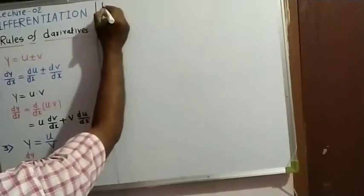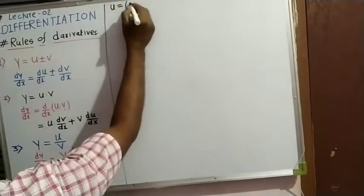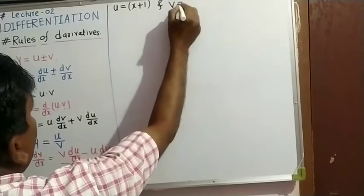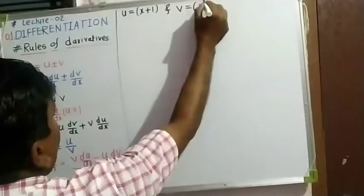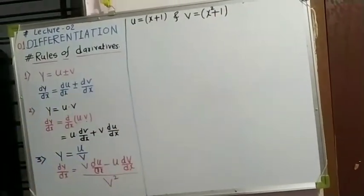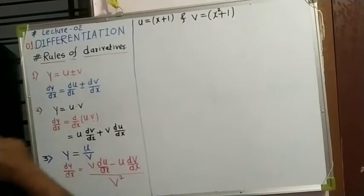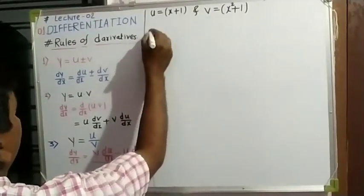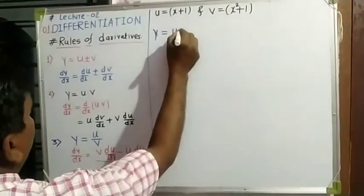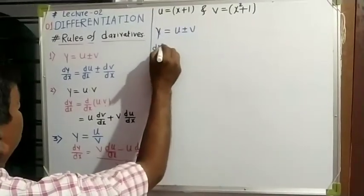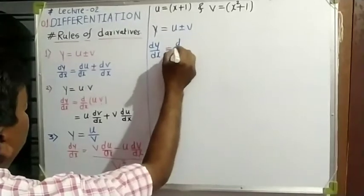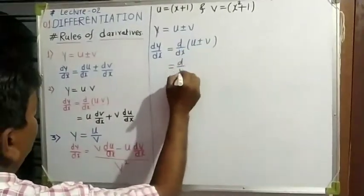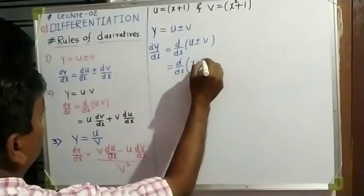For example, we find the derivative where u is equal to a function of x. Similarly, v is a function of x, that is x squared plus one. Taking the derivative on both sides, u plus or minus v: u is nothing but the function of x, that is x plus 1.